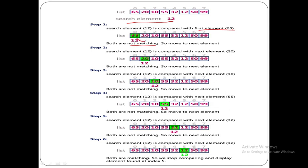We move to the next element, which is 20. We compare 12 with 20 — not matching. We then compare 12 with 10 — also not matching, 12 is not equal to 10. We move to the next element and compare 12 with 55 — the next element is 55, and 12 is not equal to 55. We move to the next element again.